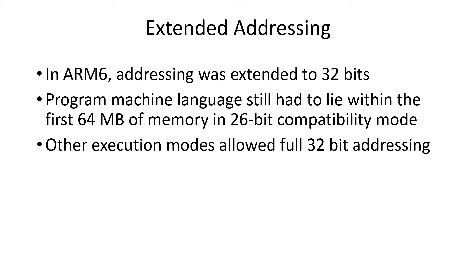Originally the ARM was a 32-bit machine. They then extended it to be a 64-bit machine, so only the program could be in the first 64 megabytes to allow 26-bit addressing. They then allowed other parts of the data to be beyond the 26-bit limit, up to 32 bits.